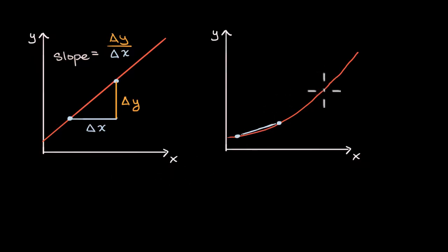But if we pick two different points, if we pick this point and this point, the average rate of change between those points all of a sudden looks quite different. It looks like it has a higher slope.